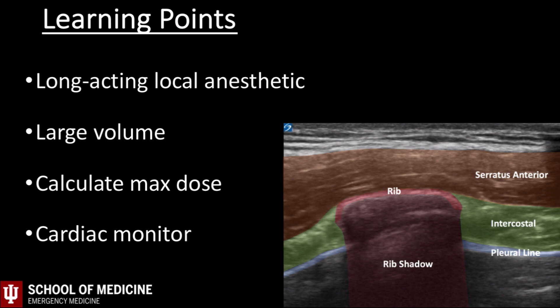CNS signs of toxicity include perioral numbness, a metallic taste, muscle twitching, altered mental status, and seizures. These tend to precede cardiovascular effects, with classic findings of sympathetic activation — the most feared complication being ventricular arrhythmias. Supportive care and lipid rescue are the treatment for local anesthetic toxicity.